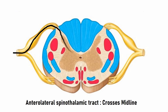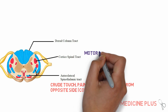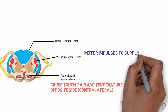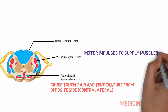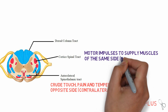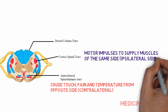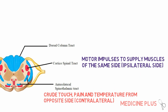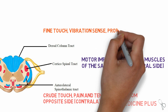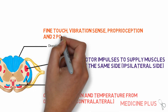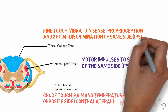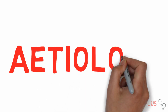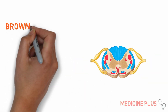...cross the midline before being relayed to the higher centers. The corticospinal tract transmits motor impulses to supply ipsilateral muscles. The dorsal column tract carries ipsilateral fine touch, vibration sense, proprioception, and two-point discrimination sense.